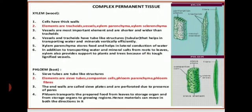The next part is phloem. In phloem, sieve tubes are the tube-like structures. The elements are sieve tubes, companion cells, phloem parenchyma, and phloem fibers. The end walls are called sieve plates and are perforated due to the presence of pores. In the sieve tubes, different cells are located one above another, and their membranes get fused or have small pores, which is known as the sieve plate, as seen in figure 2.